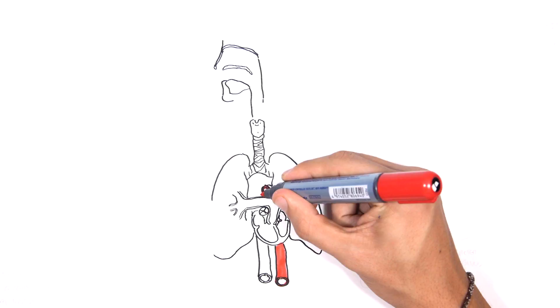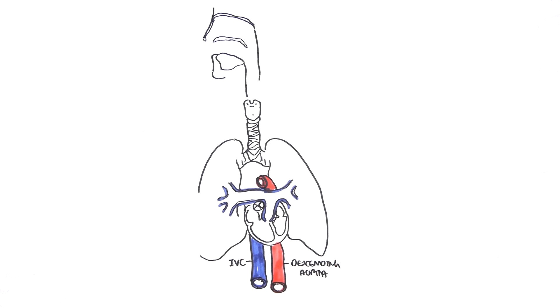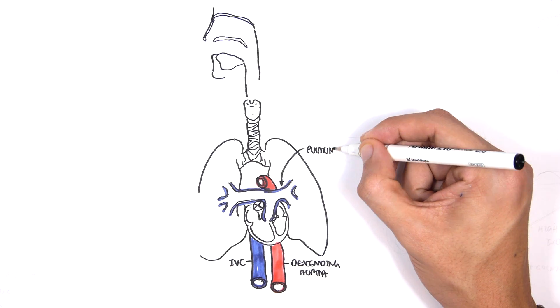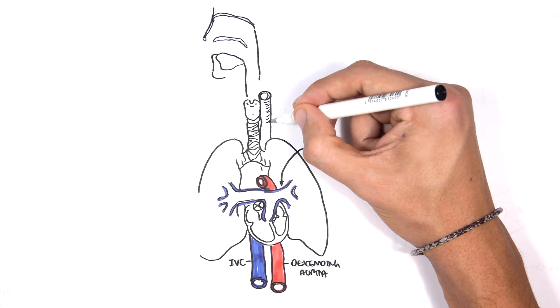So here we have the human respiratory tract, the lungs. And here is the inferior vena cava, descending aorta, the pulmonary arteries and the trachea. And behind the trachea is the esophagus.